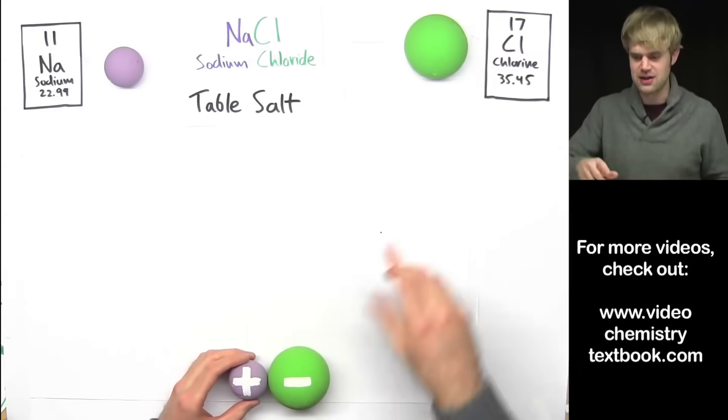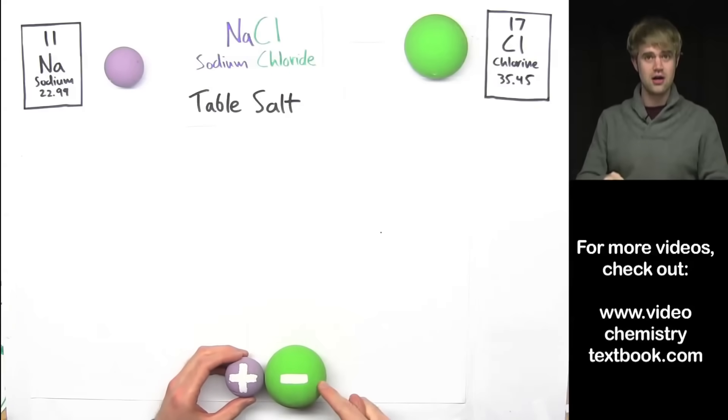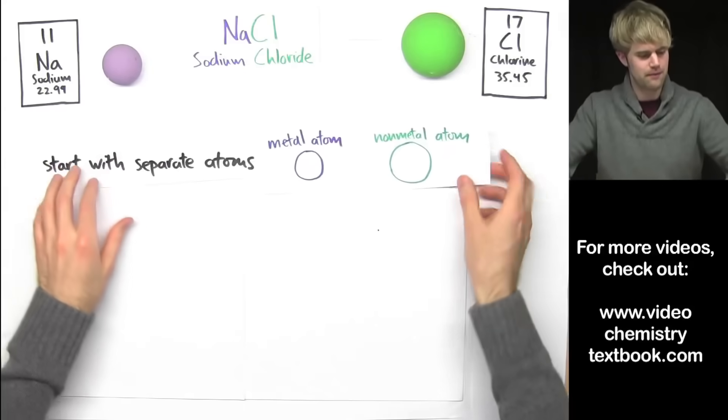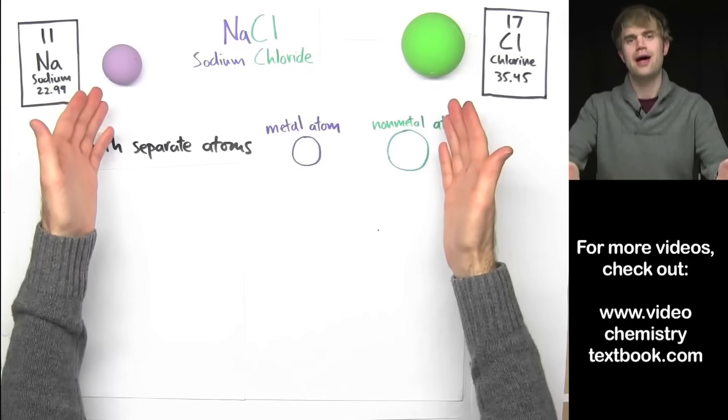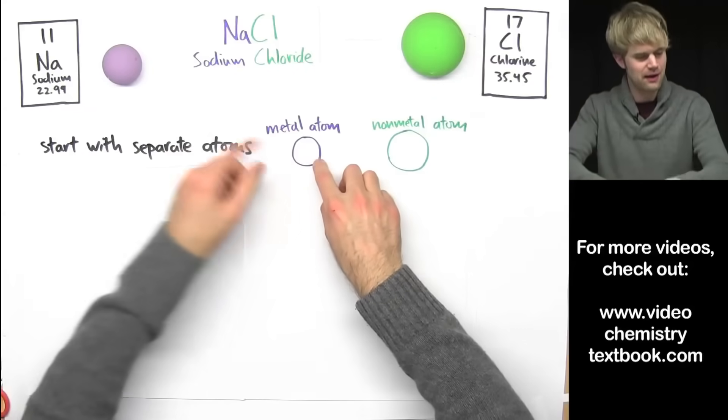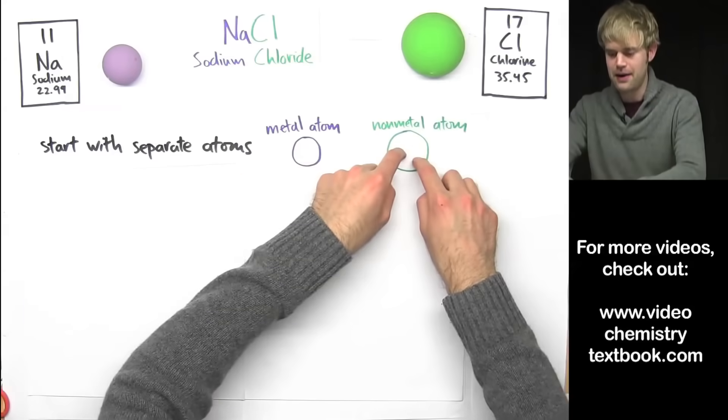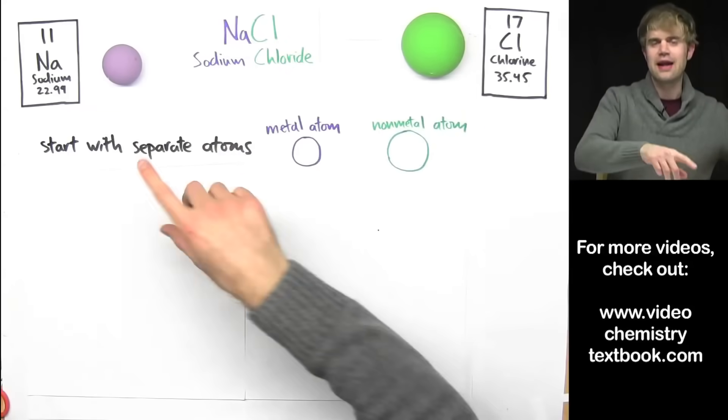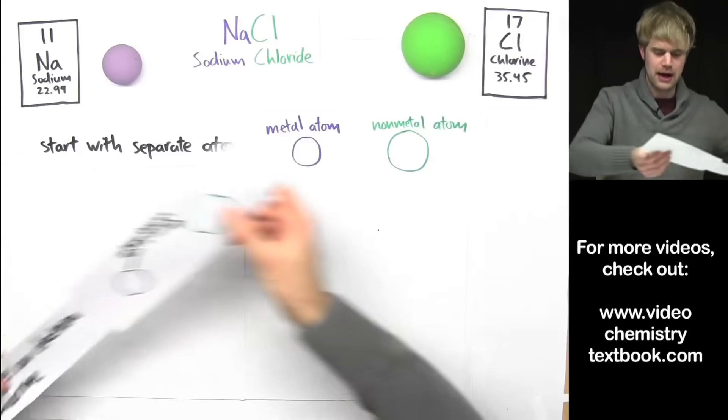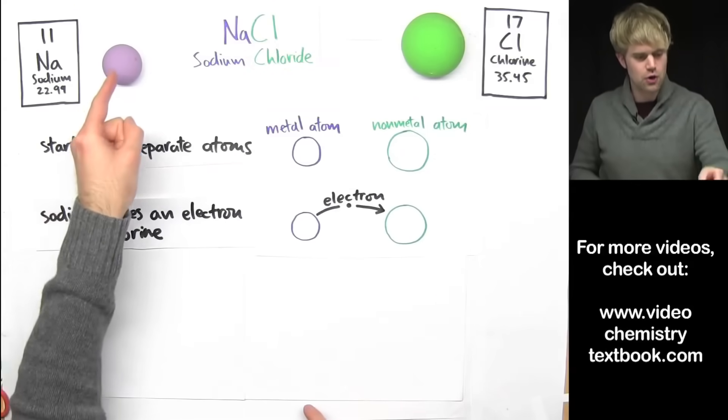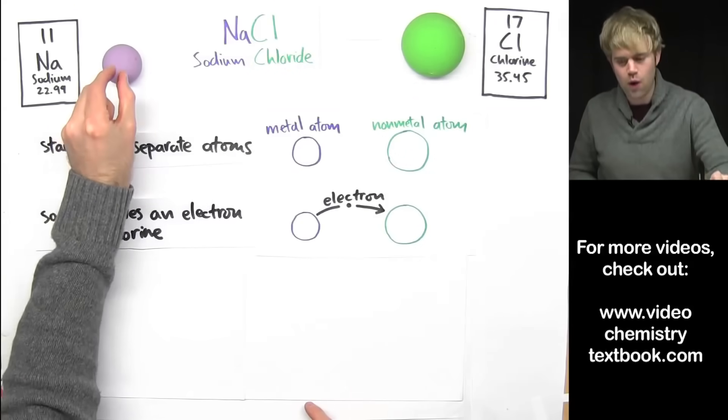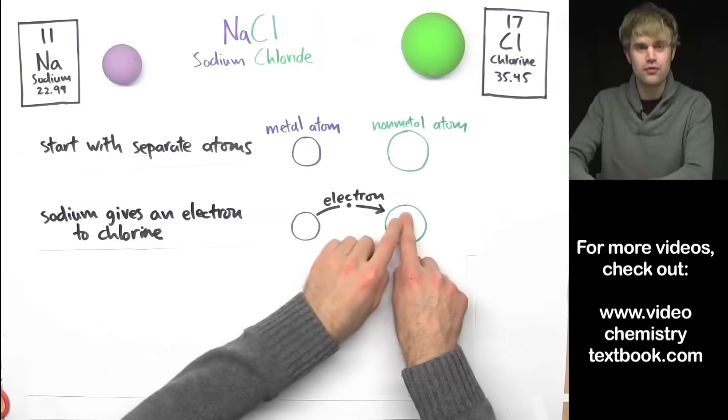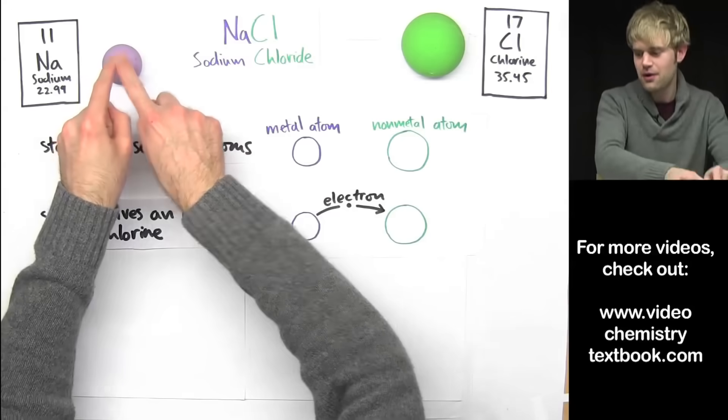Let's look at the steps that we have to take to go from this to this. The first step is pretty much what I got right here. We're starting with two separate atoms that aren't connected. We got the metal atom, the sodium here, and the non-metal atom, the chlorine over here. Now, the first thing that happens on the road to an ionic bond is that the sodium atom gives one of its electrons to the chlorine atom. Here's the electron moving between the two of them from the sodium to the chlorine.